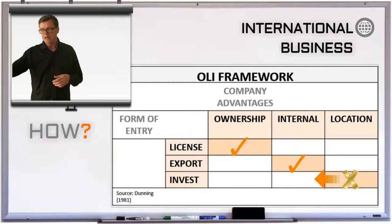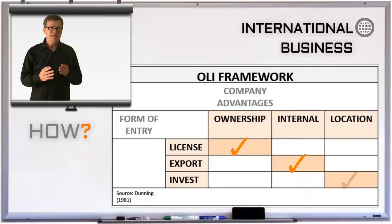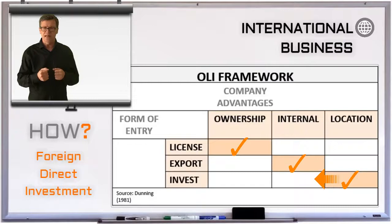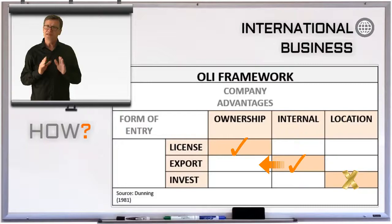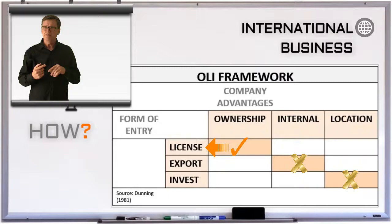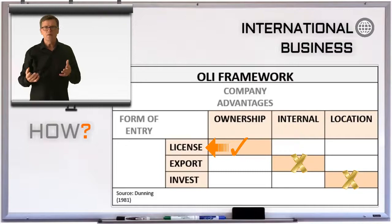We may need the low labor cost, the raw materials, or the know-how a country has. If we have advantages in all three areas — ownership, internalization, and location — we are in a strong position for foreign direct investment. If we only have ownership and internalization advantages, it might be better to export indirectly or directly to that target market. If we only have ownership advantage, we're better off selling a license for our product or know-how to someone who will operate on that foreign market.